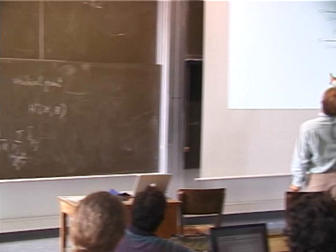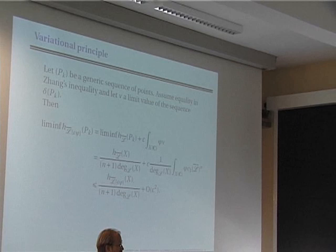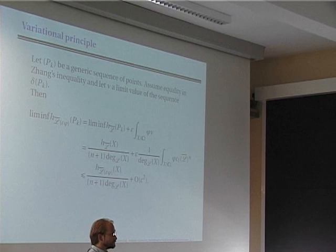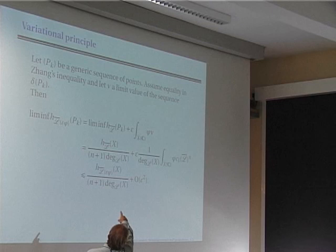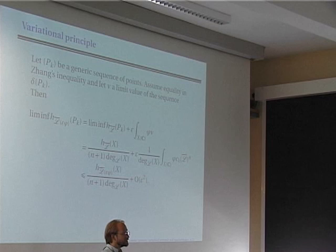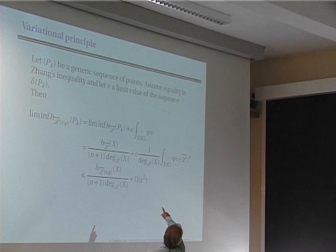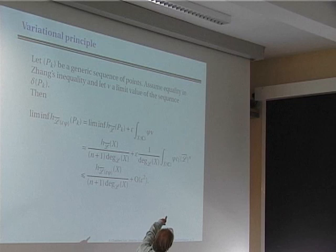First, the liminf of h_{L̄(εφ)}(P_k) is the liminf of the height of P_k for the original line bundle, plus ε times the integral of φ against ν. Now by assumption, the sequence P_k achieves equality in Zhang's inequality, so the liminf of h(P_k) equals h(X)/((N+1)·deg(X)), and the second term is ε times the integral of φ against ν.